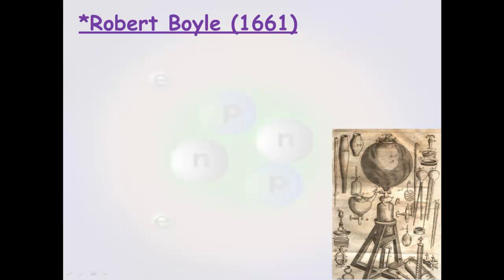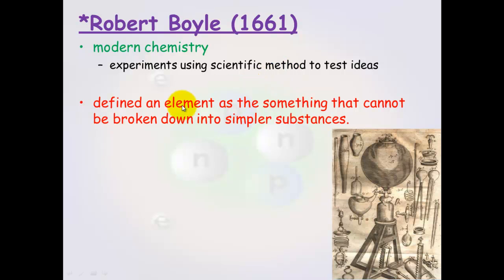And it wasn't until Robert Boyle that a distinction between alchemy and chemistry became distinct. So he's thought of being the father of modern chemistry. He used experiments with scientific methods to test ideas and this was the basic difference between alchemists who were just doing things randomly to actual modern chemistry. Robert Boyle defined an element as something that cannot be broken down into simpler substances.